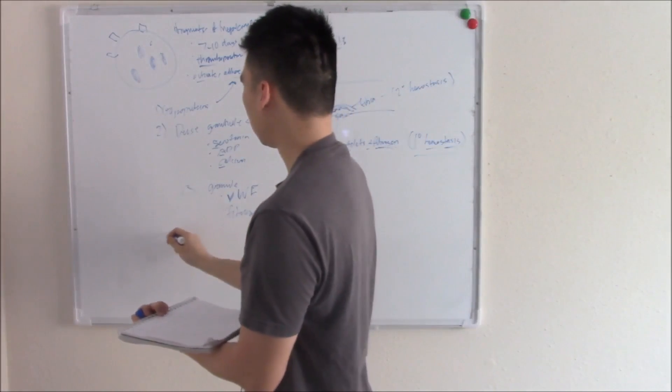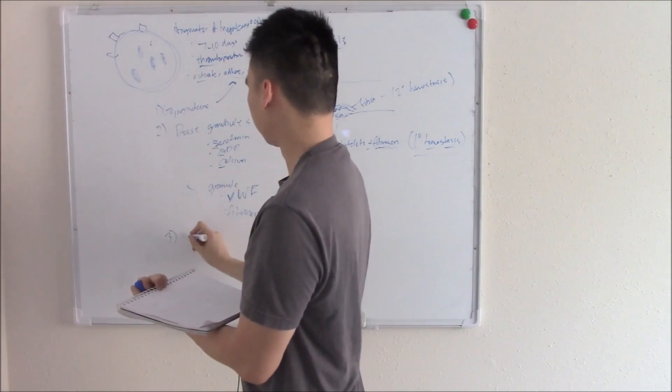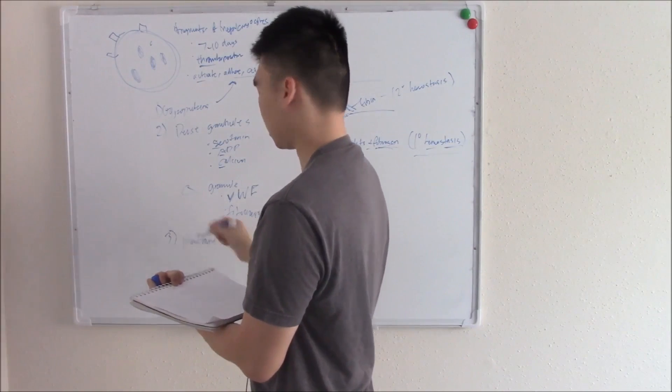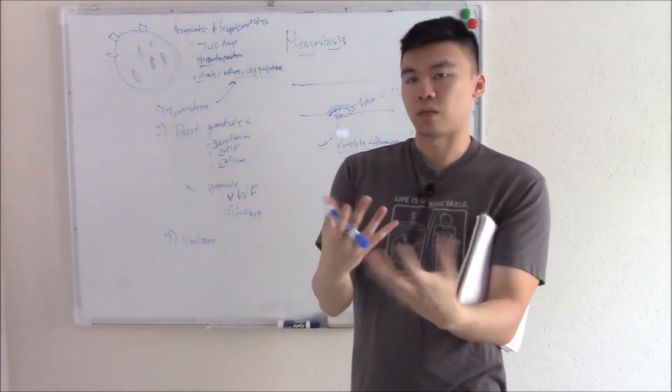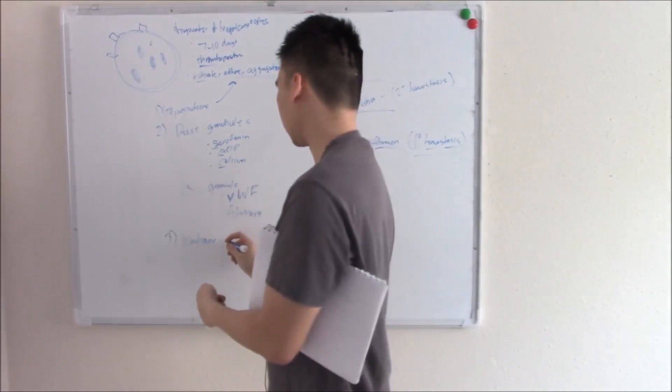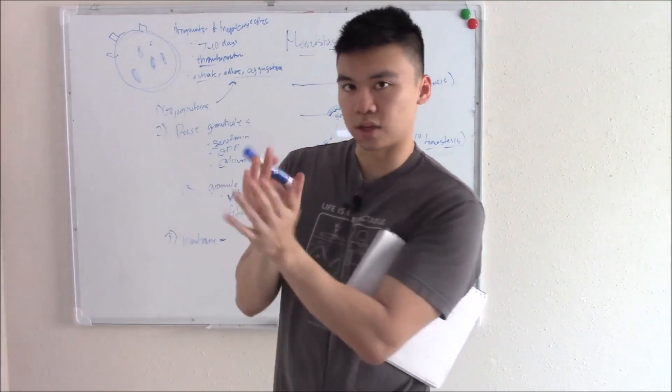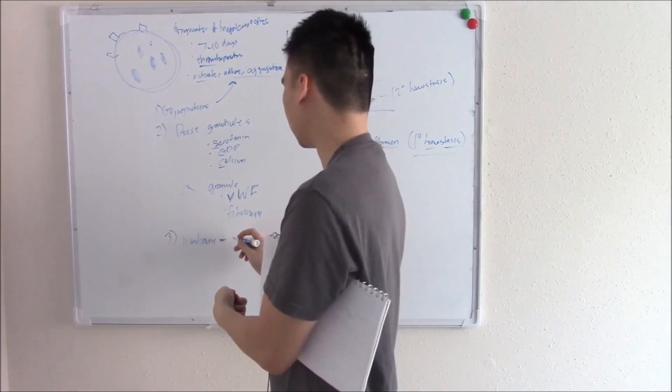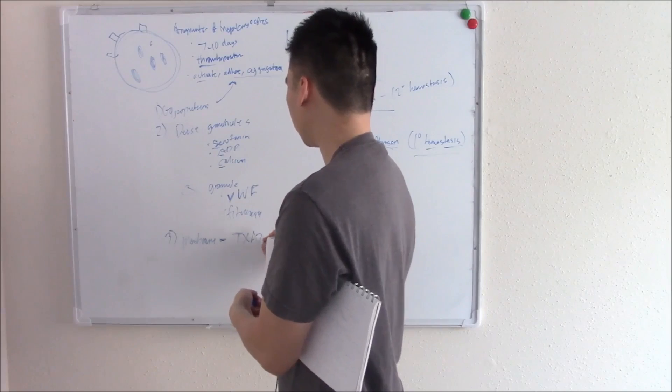Lastly, a very important part, you have your membrane. Your membrane, like a lot of other membranes, can undergo the arachidonic pathway and make arachidonic acids. In particular, it has something special to your platelets, thromboxane synthase. Thromboxane synthase makes thromboxane, especially thromboxane A2.